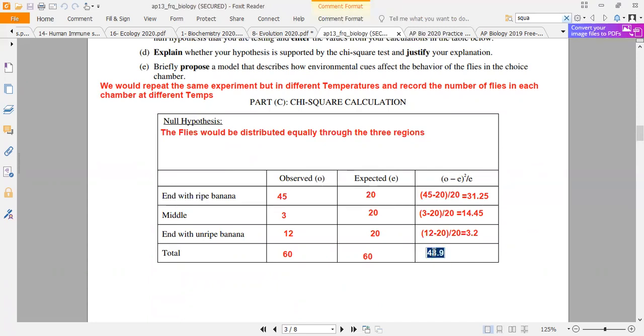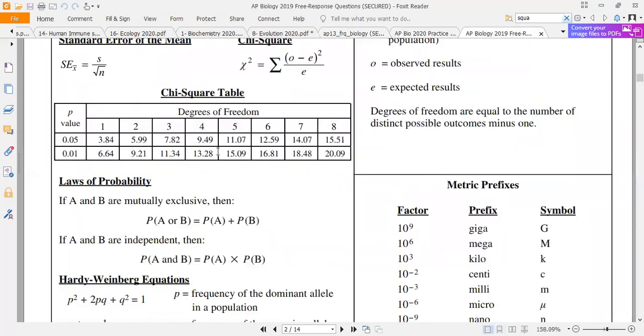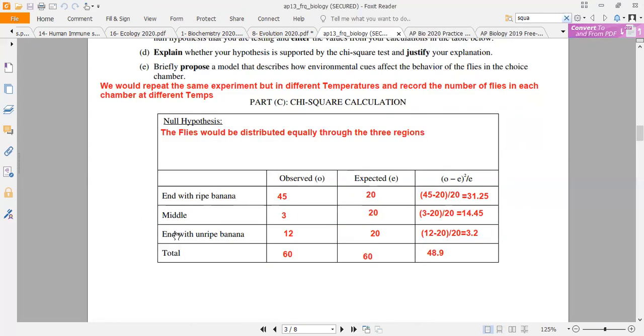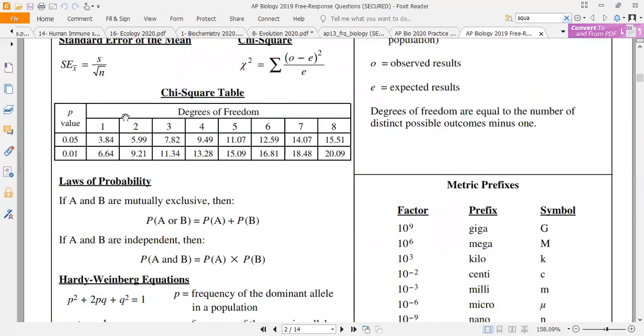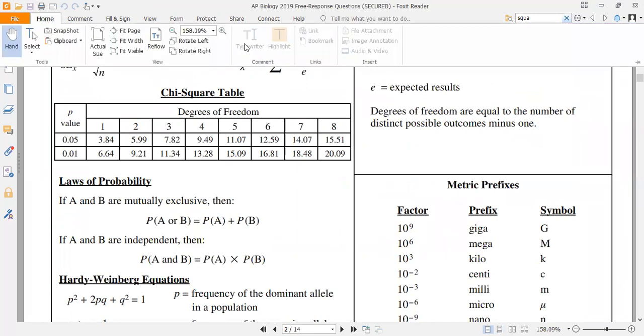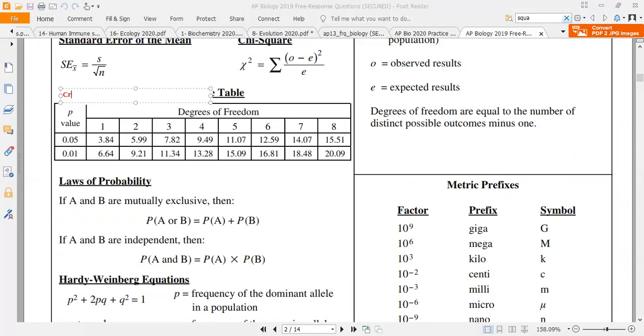I will see the Chi-square value and the critical value. The critical value depends on how many outcomes. One, two, three outcomes. The critical value equals the number of outcomes minus one.